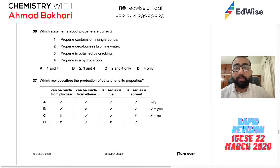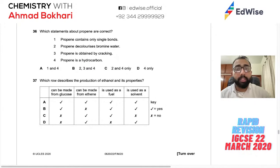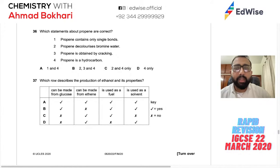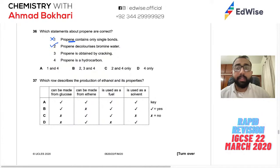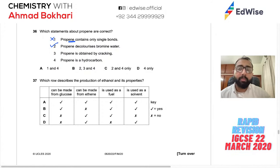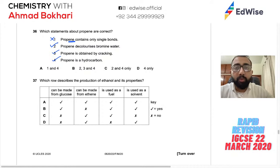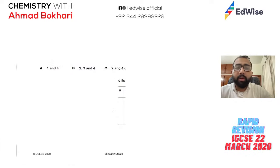Question 38: Which statements about propene are correct? Propene is an alkene — it has a double bond and is unsaturated. 'Contains only single bonds' is wrong. Propene decolorizes bromine water because it is unsaturated — correct. Propene can be obtained by cracking large hydrocarbons — correct. Propene is a hydrocarbon (contains only hydrogen and carbon) — correct. Statements 2, 3, and 4 are correct.